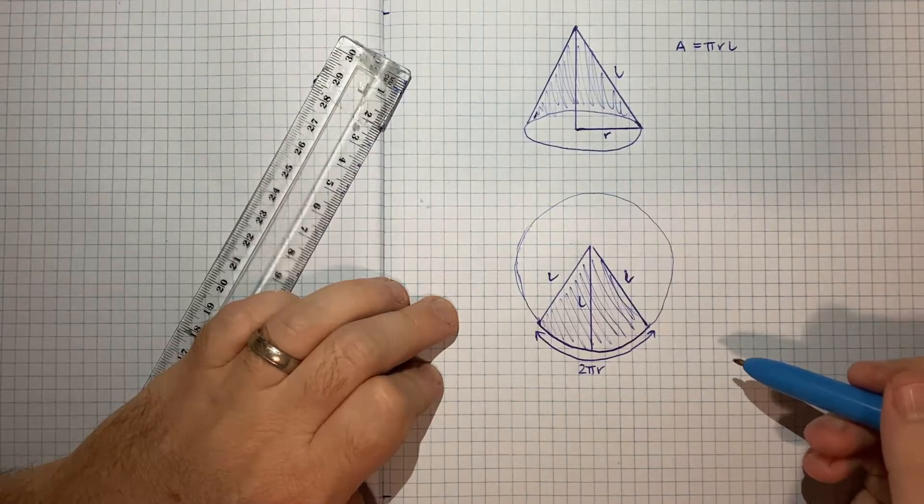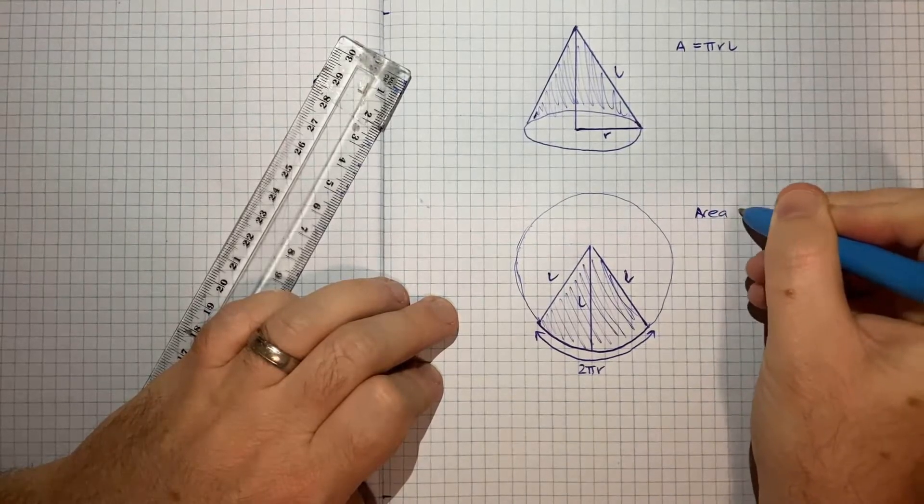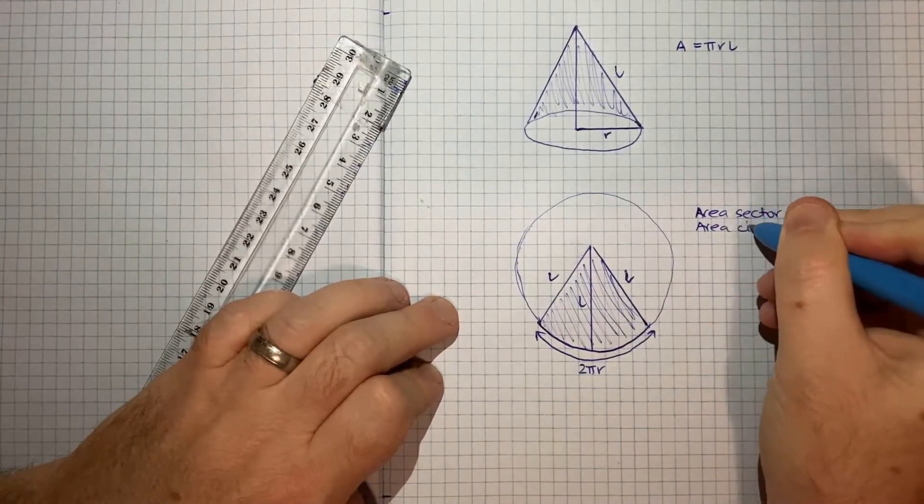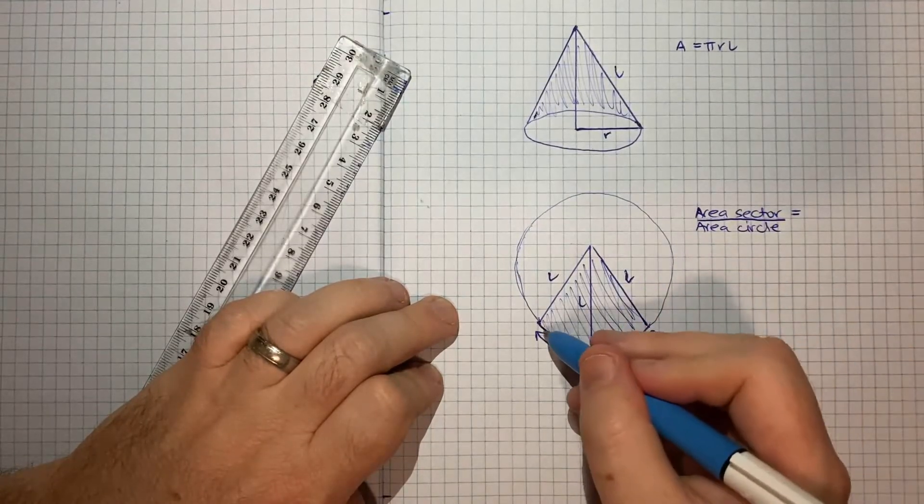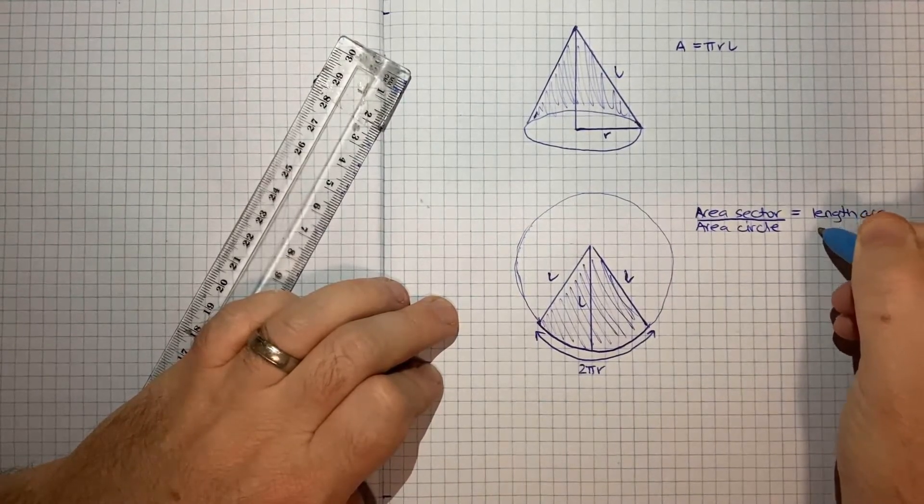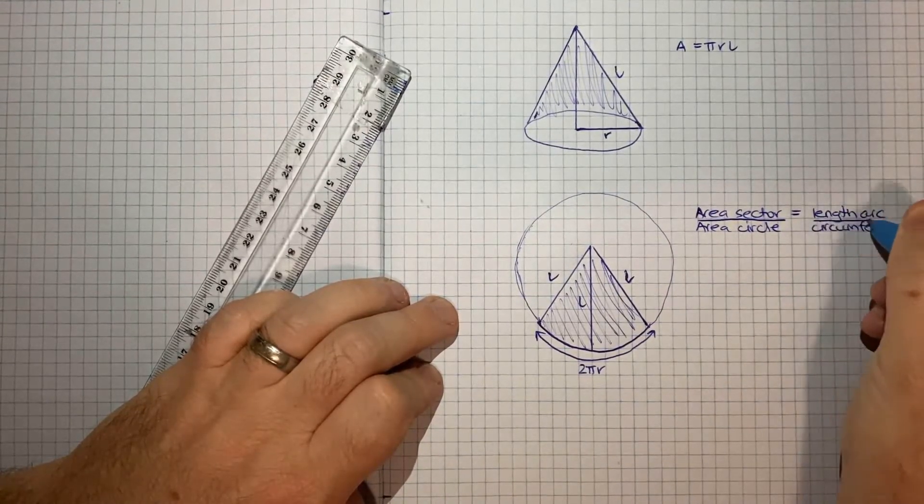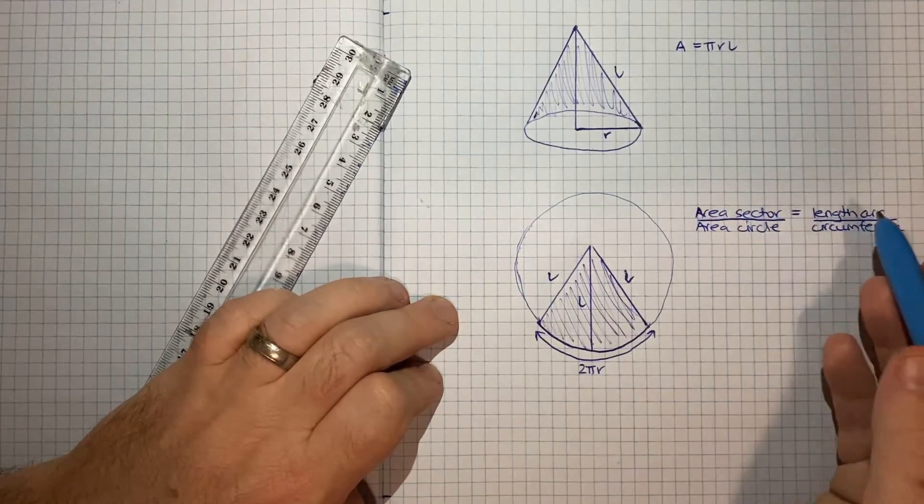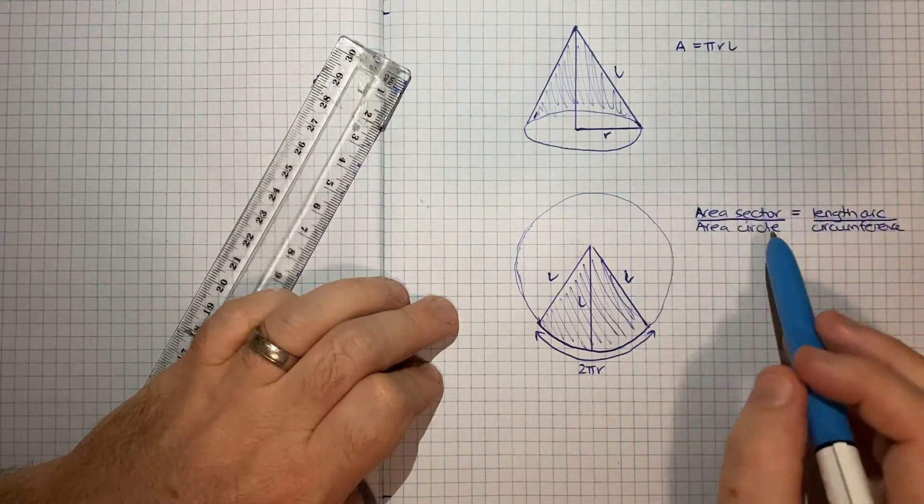We can make use of the rule that the ratio of the area of a sector of a circle, so the area of some sector of a circle over the area of the circle, that ratio is equal to the ratio of the length of an arc over the whole length of the circle, or the circumference of the circle. So the ratio of those two things are the same. That's something you can rely on, no need to prove it. You can just rely on that. If you want to see the proof you could go and look that up, but for this proof we can rely on this.